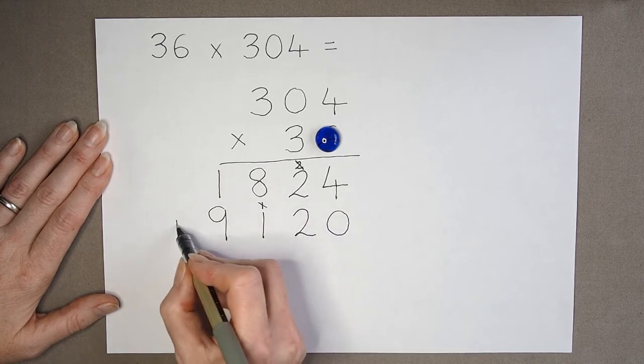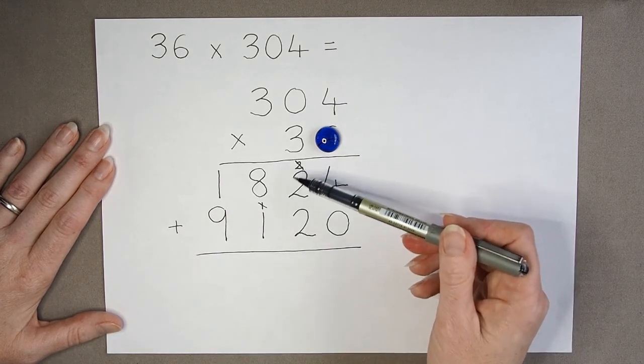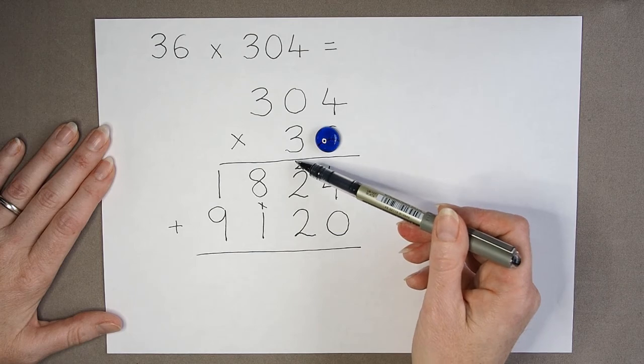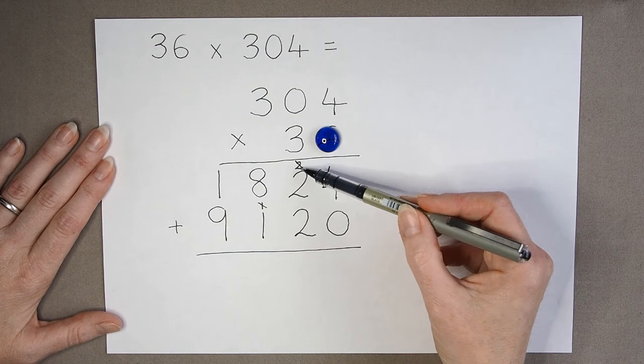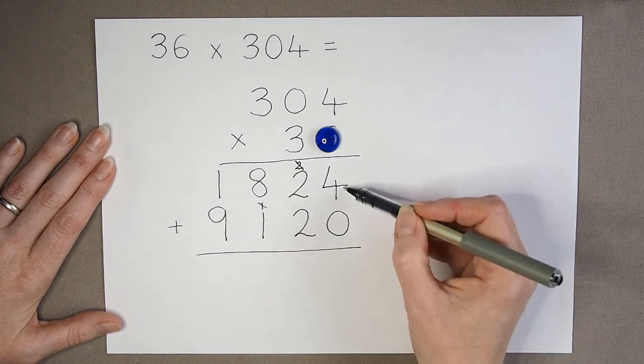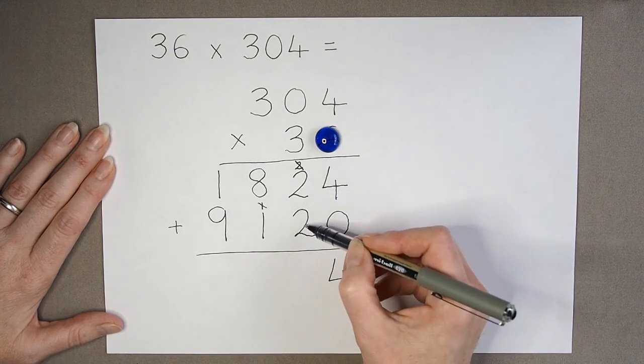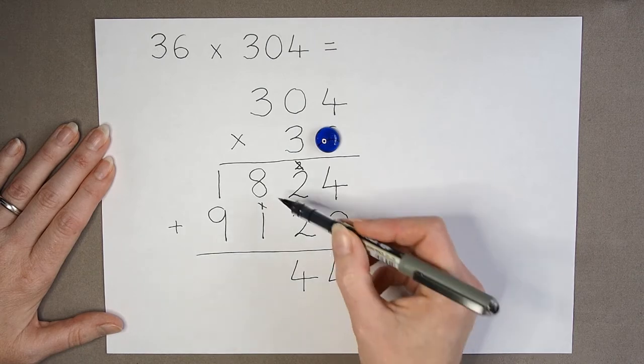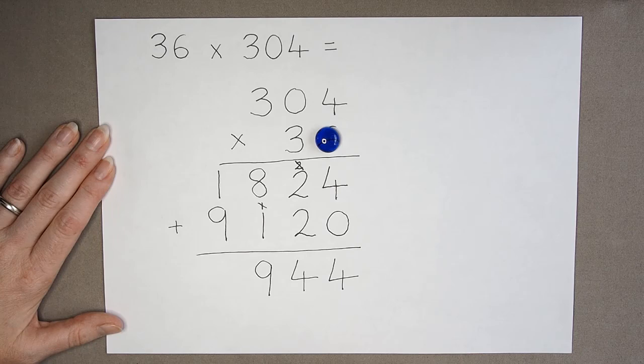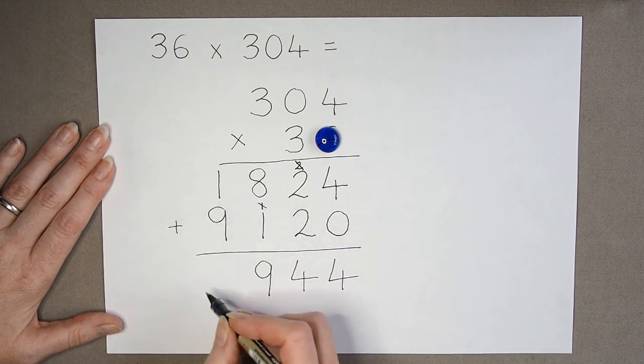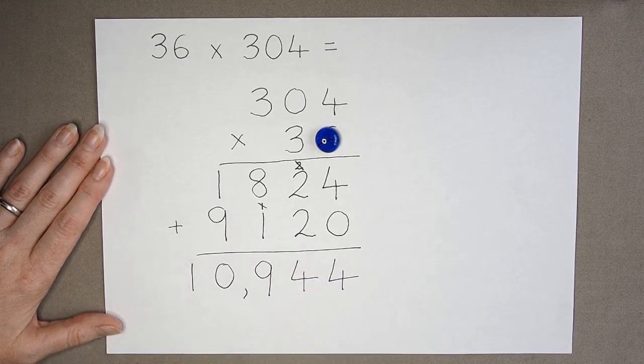Now I need to just add those two numbers together. And we can see the importance of keeping these numbers small, these digits. And when we've added them on, crossing them out, because now we're going to add up and we don't want to accidentally add one of these numbers by mistake. So 4 add 0 is 4, 2 add 2 is 4, 8 add 1 is 9, and 1 is 10. So there's my answer: 10,944.